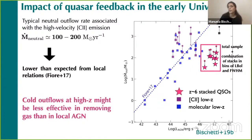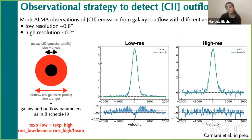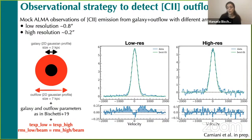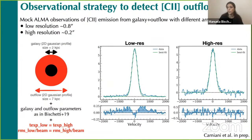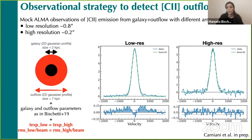Let me focus on what would be a good observational strategy to detect CII outflows at redshift 6. To this purpose, we built mock ALMA observations of CII emission from a system consisting of a galaxy plus an outflow. We observed this system with two different array configurations: a low resolution of 0.8 arcsecond and a high resolution configuration with a beam of 0.2 arcsecond. To constrain the galaxy and outflow CII parameters, we used the information from the stack just shown.